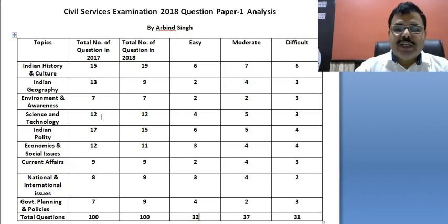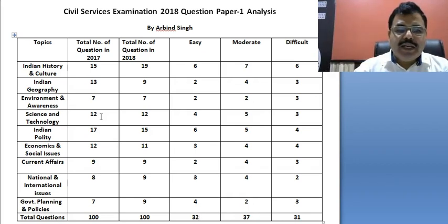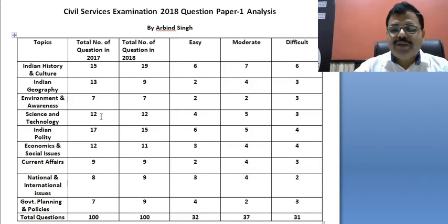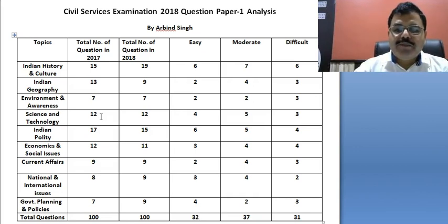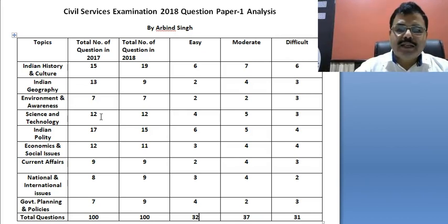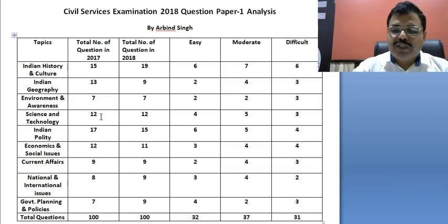In Current Affairs, nine questions were asked again — two easy, four moderate, and three difficult. In National and International Issues, instead of eight questions, nine were asked this year: three easy, four moderate, and two difficult. In Government Planning and Policy, nine questions were asked: two easy, two moderate, and three difficult.